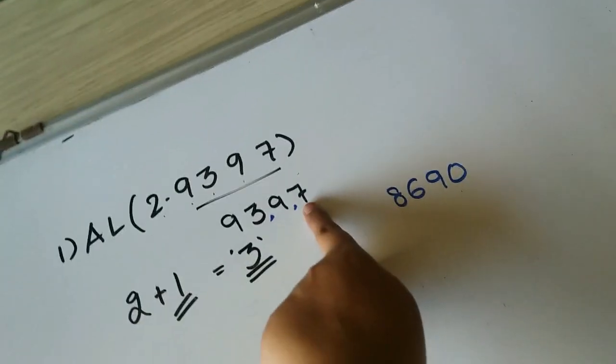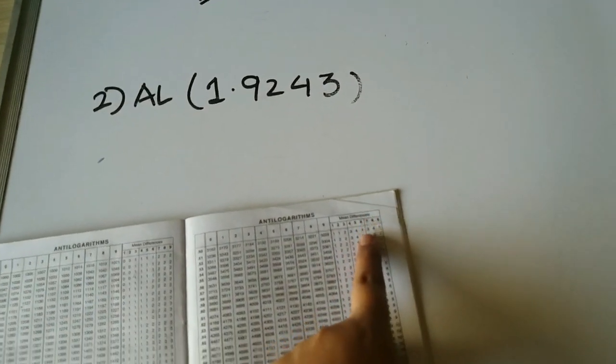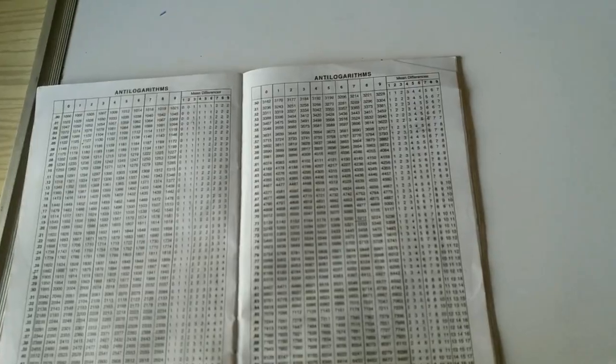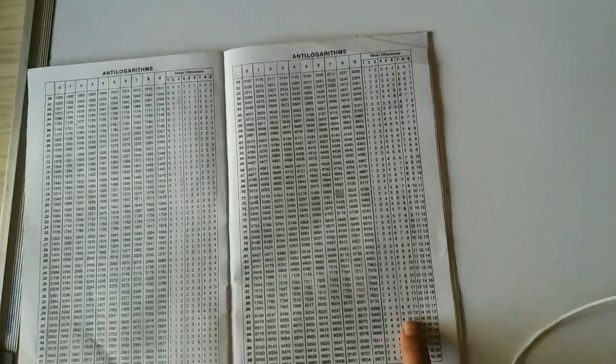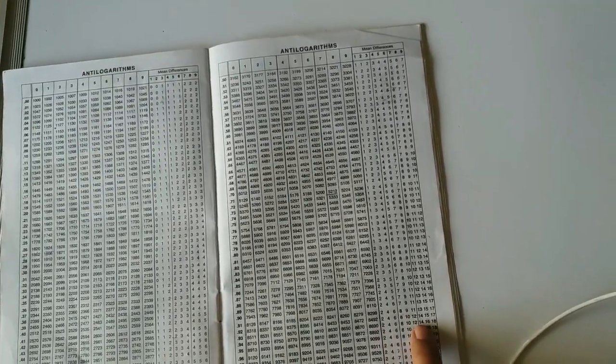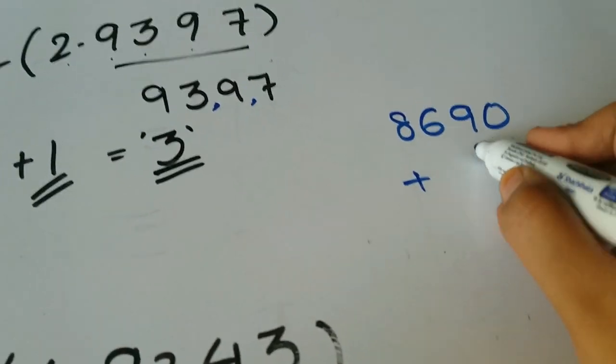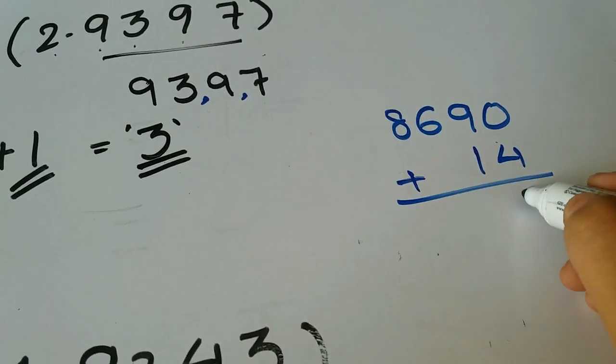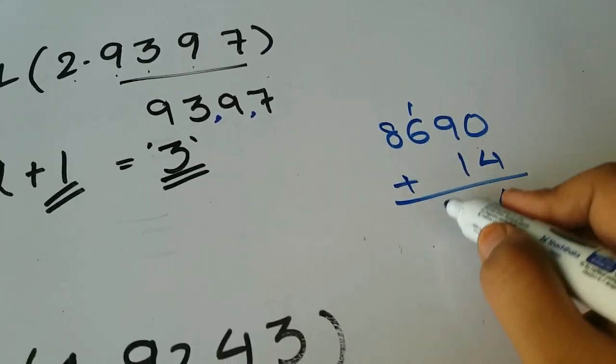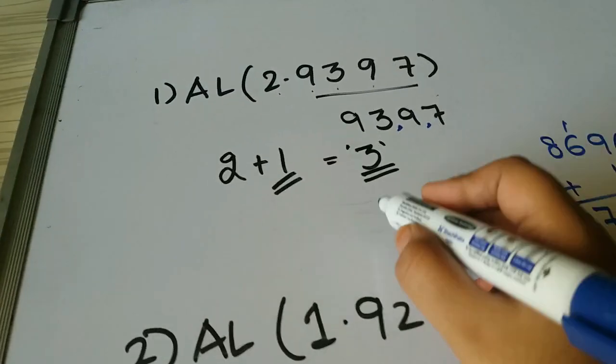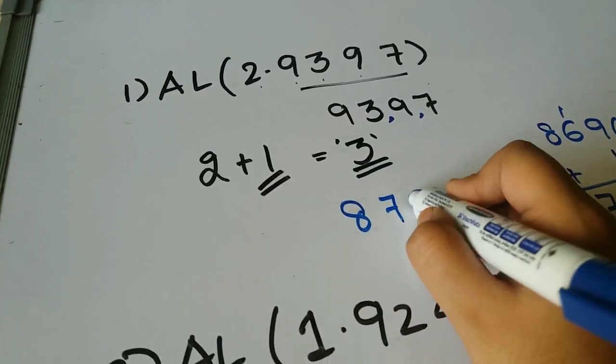Then remaining digit is 7. Mean difference 7 in 93, so that is 14. So I will add 14 to this number. It would be 8704. So my antilog is 8704.